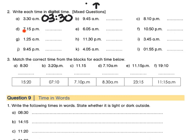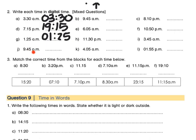Directly beneath it, for D, we have 7:15 PM. PM means evening time, so P for plus 12 hours. 7 plus 12 is 19, so 19 hours and 15 minutes of the day have passed. Directly beneath it, 1:25 AM — very early morning, the first hour of the day. We write it as 01:25; it stays the same. For J, 9:45 PM — this is night time, the day is heading towards its end. P for plus 12: 9 plus 12 means 21 hours and 45 minutes of the day have passed. Now press pause and complete all of question 2 by yourself in your workbook.